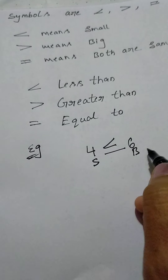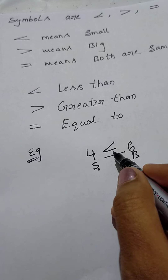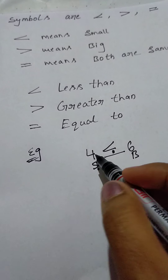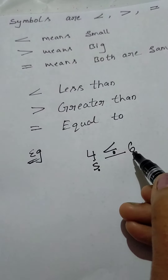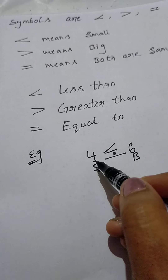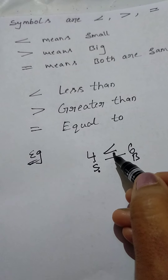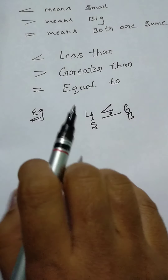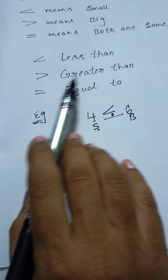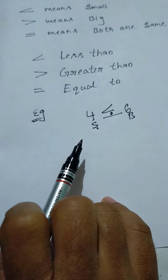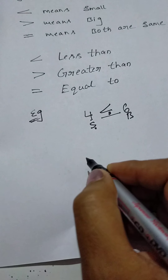So, use less than between these numbers. Why? Because the first one is the smallest number and the last one is the biggest number. So, first one is the smallest number — that's why we use less than. Comparing these two numbers, the first one is the smallest, so use less than.